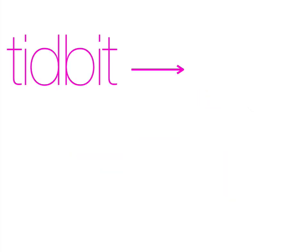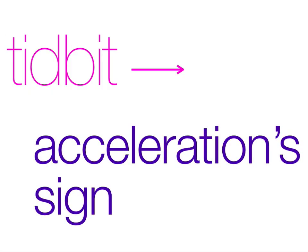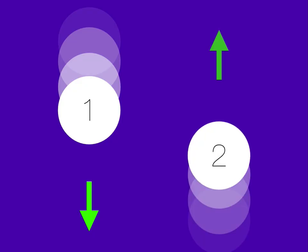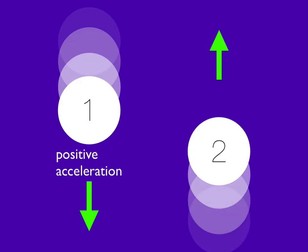In addition, just like velocity, acceleration sign is really important too. If we have two objects accelerating in opposite directions, one will have a positive acceleration and the other will have a negative acceleration. Looking at an example with two balls: the first ball accelerates downward, the second ball accelerates upward. Ball one has positive acceleration, and therefore ball two has negative acceleration. So, to recap: acceleration, average acceleration, and acceleration sign.